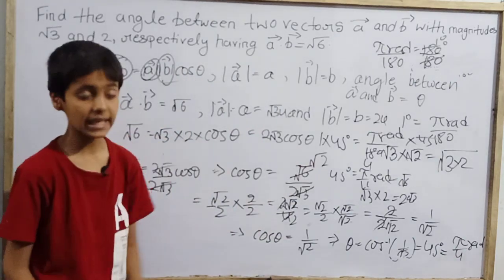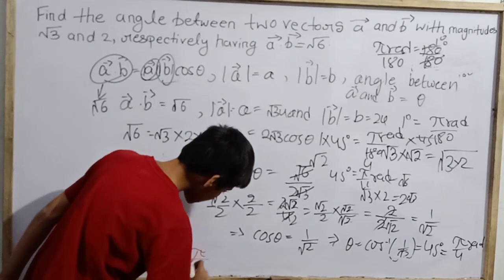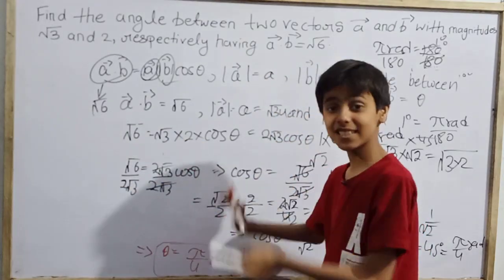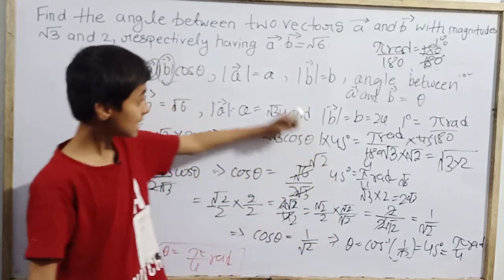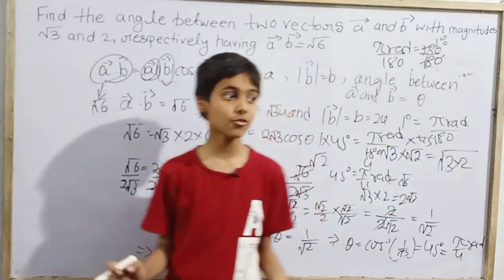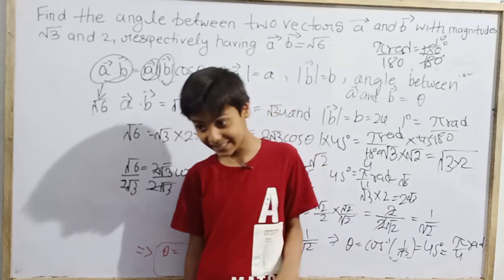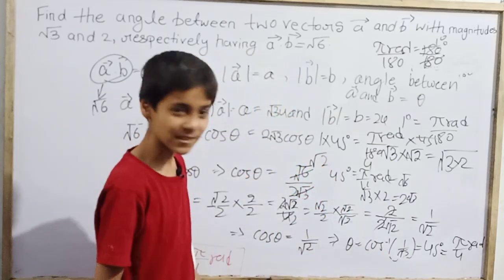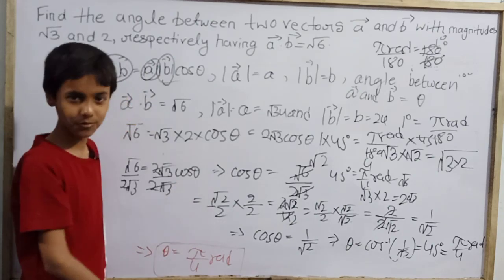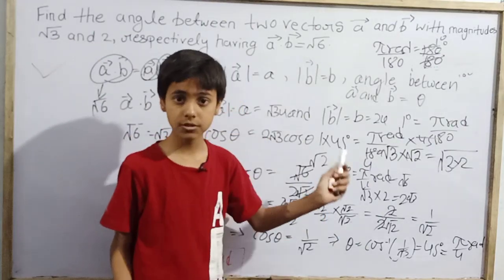1 degree is pi upon 180 radians. 45 degrees is 45 times pi upon 180 radian, which is pi upon 4 radian. So what is the angle between the two vectors? Theta is pi upon 4 radian. This calculation took a little time but this question is very easy. You can do it in two lines. We have explained each and every step. This was a short question with a long answer. The question is solved and now we are heading to the next question.